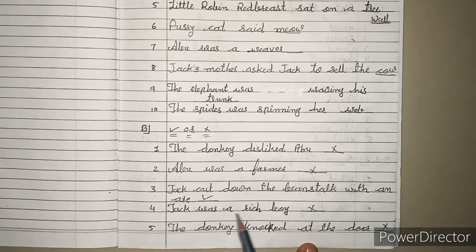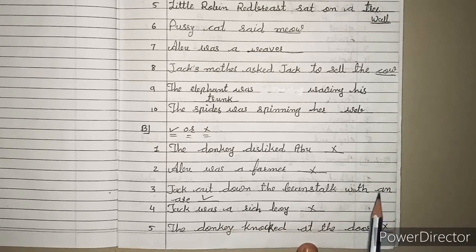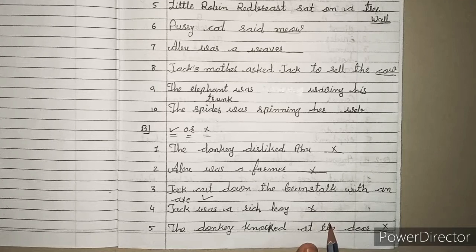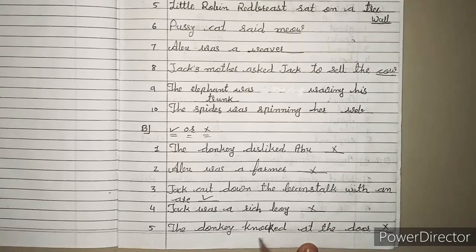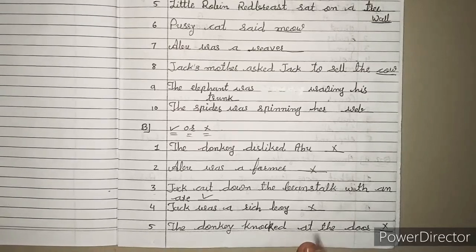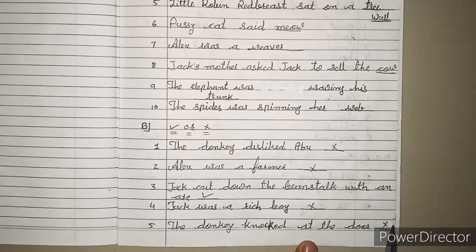4. Jack was a rich boy. Jack rich boy था? नहीं, वो तो poor boy था, इसलिए यहाँ पर क्या आएगा? Wrong. 5. The donkey knocked at the door. Donkey ने door knock किया था? नहीं, तो यहाँ पर क्या आएगा? Wrong.